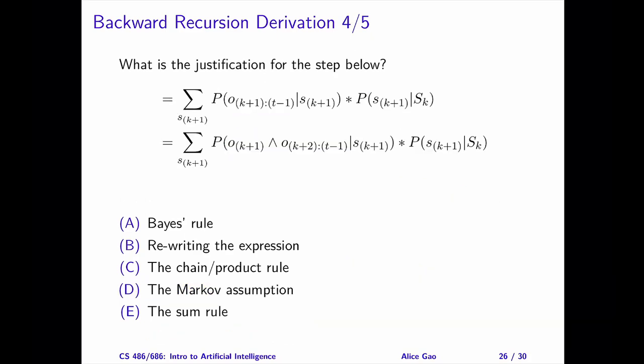Step 4. Pause the video and choose an answer. The correct answer is B, rewriting the expression. We split the sequence of observations from day k plus 1 to the end into two parts. The first term contains the observation on day k plus 1 only. The second term contains the observations from day k plus 2 to the end.